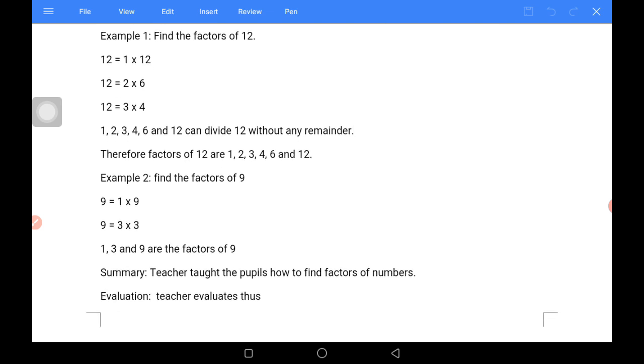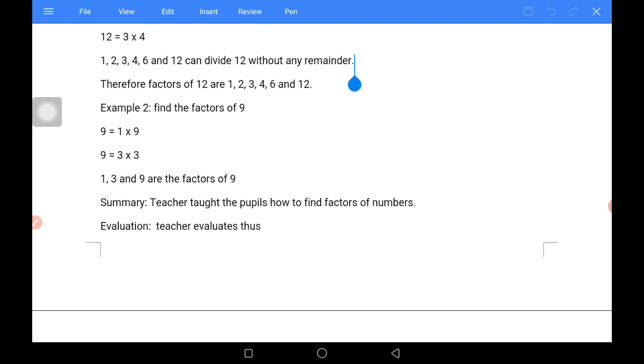Another example: finding the factors of 9. We all know that 9 is an odd number, so 2 cannot divide 9. But 1 can divide 9, 9 times. 9 can also divide itself 1 time. 3 can also divide 9, 3 times. Therefore, 1, 3, and 9 are the factors of 9.